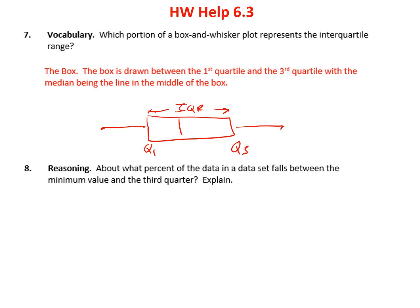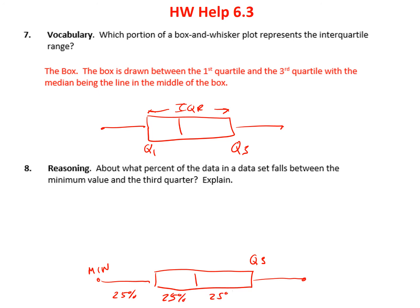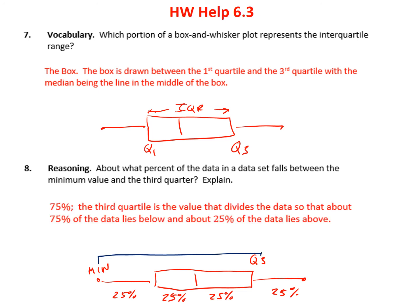And number 8 says about what percent of the data falls between the minimum value and the third quartile? Let me draw a quick box and whisker plot. They want to know how much data is between the minimum and the third quartile. Remember, the quartiles divide this into 25% each: 25% in the left whisker, 25% in the bottom box, 25% in the top box, and 25% in the right whisker — 100% total. But if I'm wanting to know how much is between the minimum and the third quartile: 25 plus 25 plus 25, that adds up to 75%.